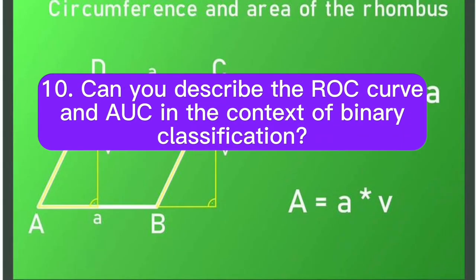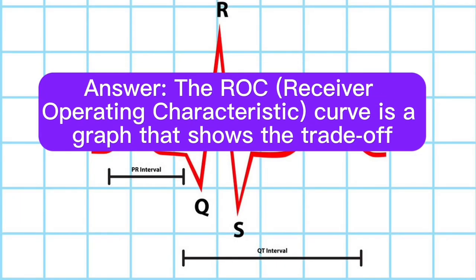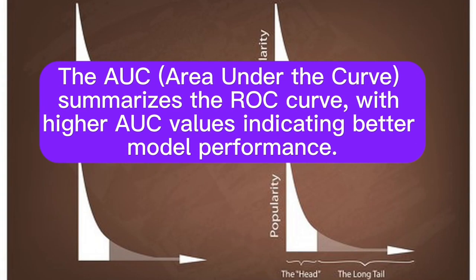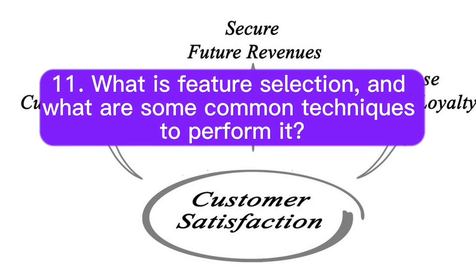Question 10: Can you describe the ROC curve and AUC in the context of binary classification? Answer: The ROC (receiver operating characteristic) curve is a graph that shows the trade-off between true positive rate (sensitivity) and false positive rate (1 minus specificity) as the classification threshold varies. The AUC (area under the curve) summarizes the ROC curve, with higher AUC values indicating better model performance.